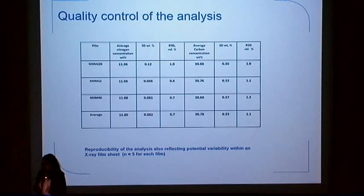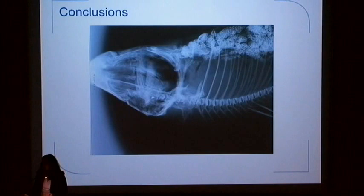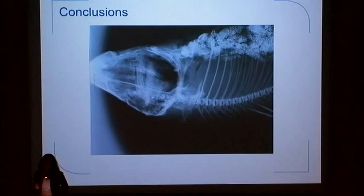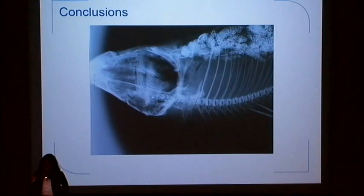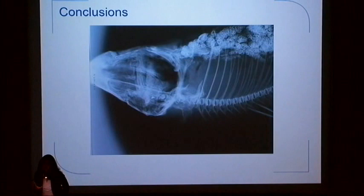In conclusion, organic elemental analysis gives accurate and quick results for identifying cellulose nitrate. I would go even further: it is an analysis that is usually overlooked, and since you can obtain the actual concentration of nitrogen, carbon, or even sulfur, it has potential to be used in conjunction with other analyses to study the degradation of film. With that, I would like to thank you for your attention.